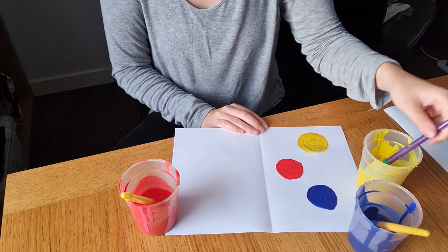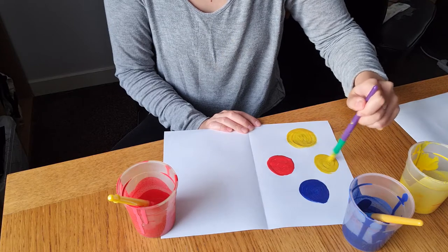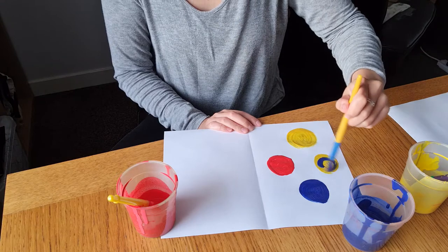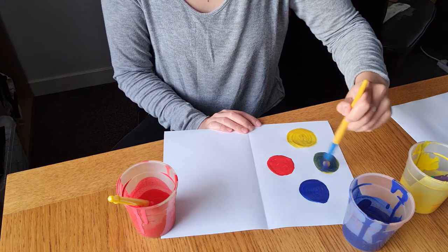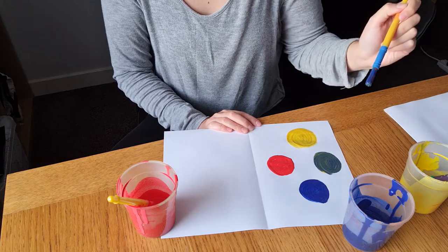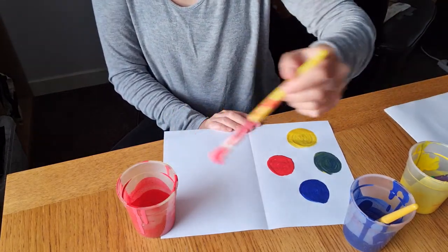I'm also going to do spots that mix colors. So I'm going to do more yellow here, but I'm going to slightly put some blue into it and see what I get, and that makes green. And we'll do another red spot.